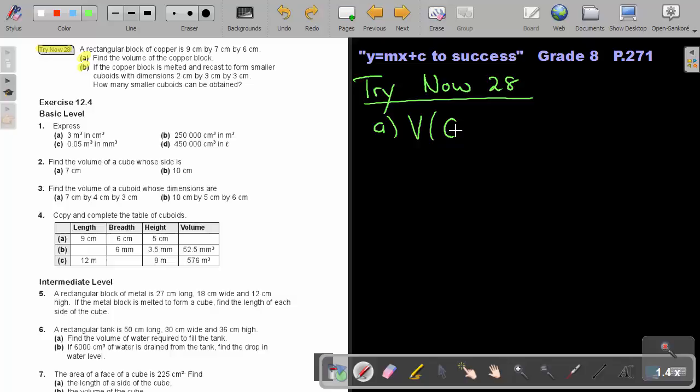So the volume of this cuboid, remember that's length times breadth times height. So that will give me 9 times 7 times 6. That will just give me 378 cubic centimeters.